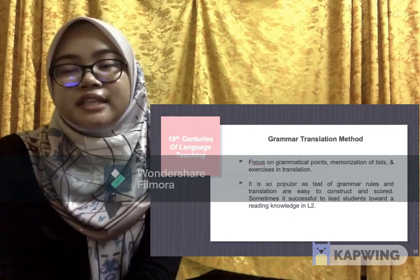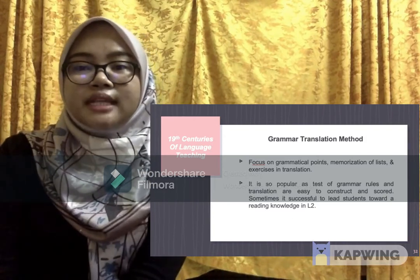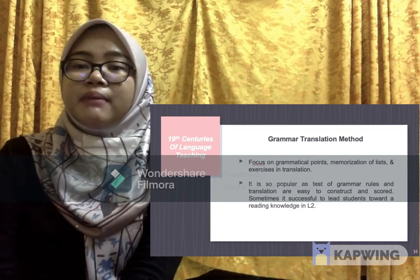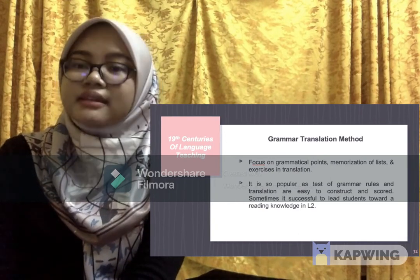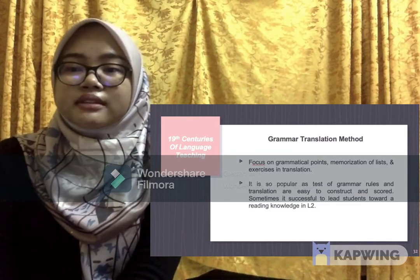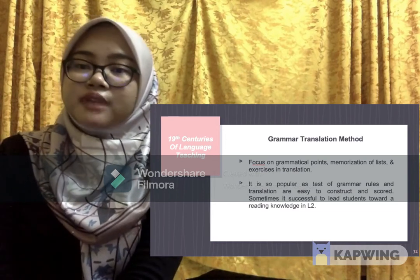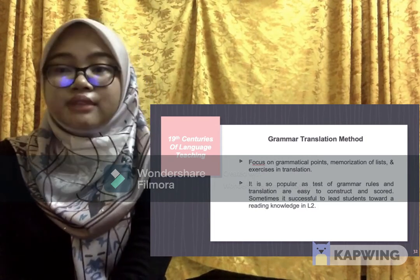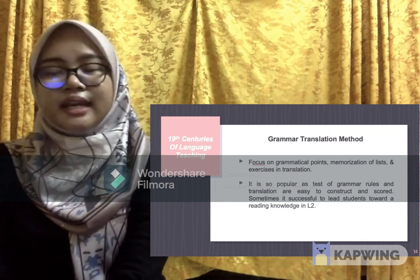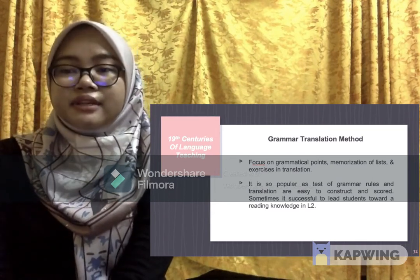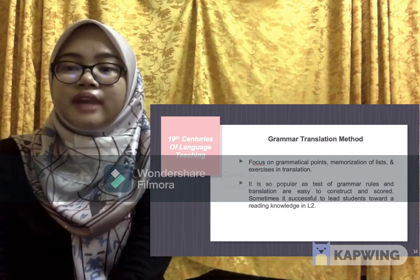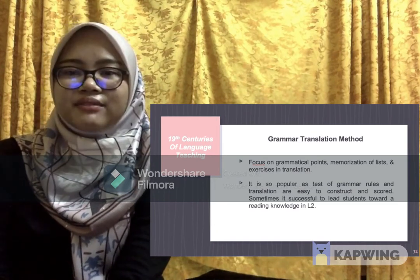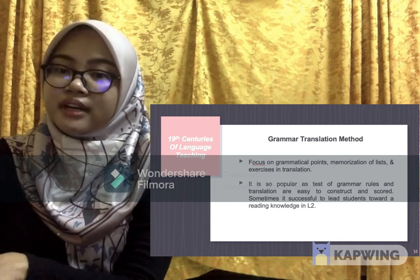The key features of the grammar translation method are derived from the classical method: heavy emphasis on grammar taught in the mother tongue, much vocabulary taught in separate lists, reading of classical texts, grammatical analysis, drills in translation, and little to no attention to pronunciation. The teacher guides students through activities, and students need to translate and recognize vocabulary. It became so popular because tests of grammar rules and translation are easy to construct and score.